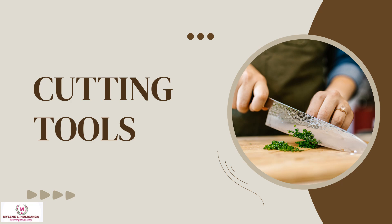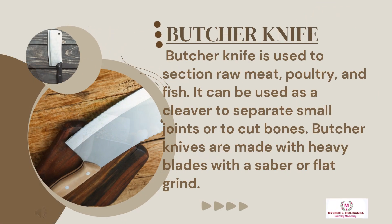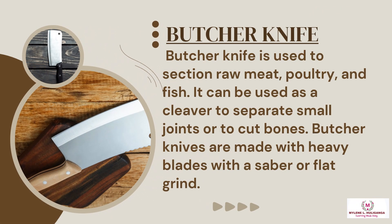The following are the cutting tools used in the kitchen. The butcher knife is used to section raw meat, poultry, and fish. It can also be used as a cleaver to separate small joints or to cut bones. Butcher knives are made with heavy blades with a saber or flat grind.